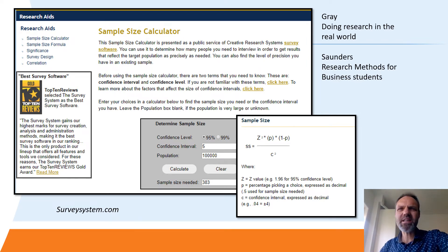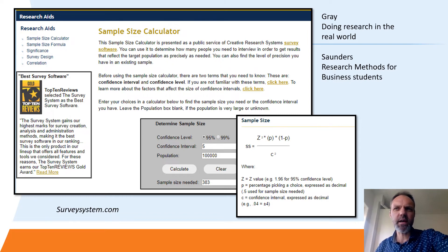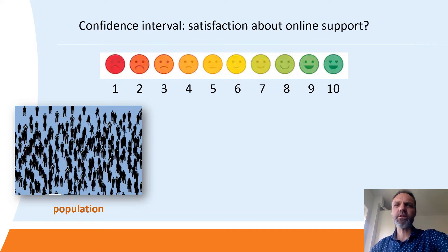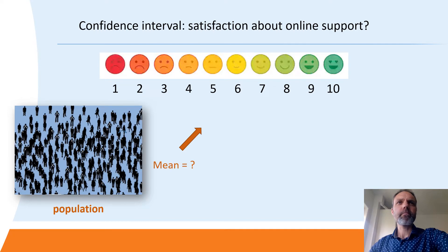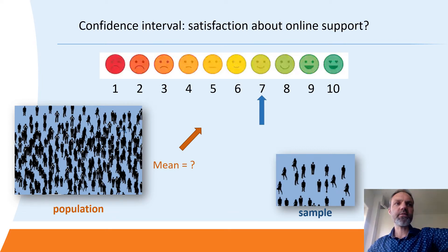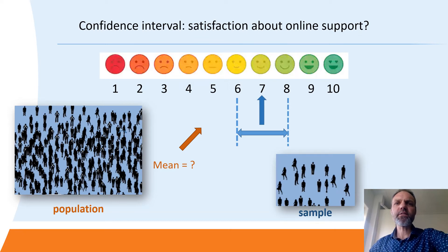You also always have to consider the so-called confidence level and the confidence interval. Let's have a look at an example. Let's say we are interested in how satisfied people are about online support, and we want to record this on a 10-point Likert scale — one being not at all satisfied, up to 10 being very satisfied. Our population is pretty big, so we decide to pick a sample. Let's say that in our sample we find an average value of seven. This does not mean that the population mean is also seven. In fact, the mean of the population can be a bit more or a bit less, and that more or less is relevant because we are interested in the population mean, not in the sample mean.